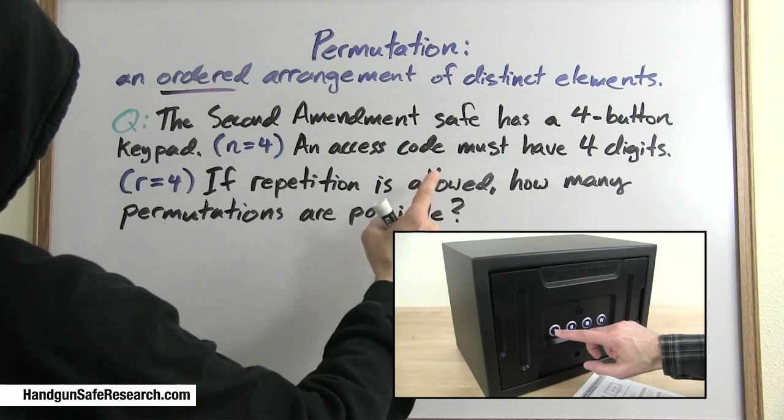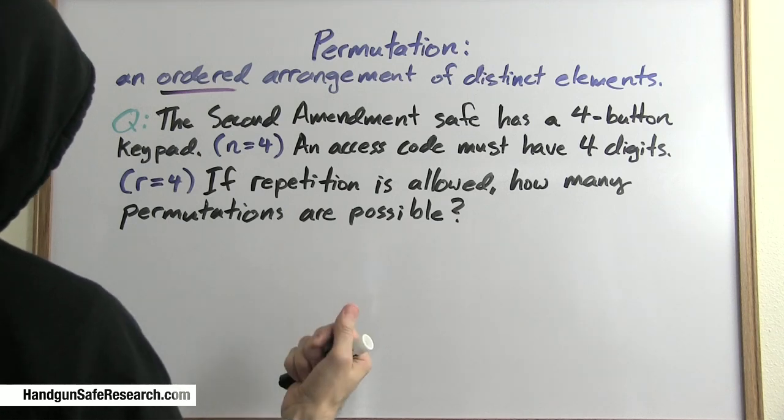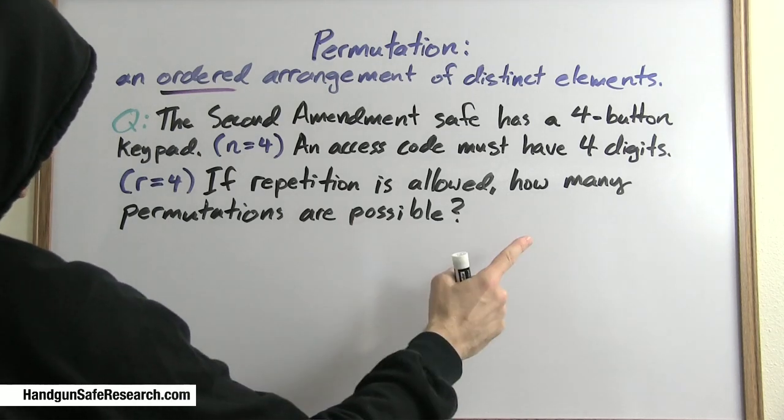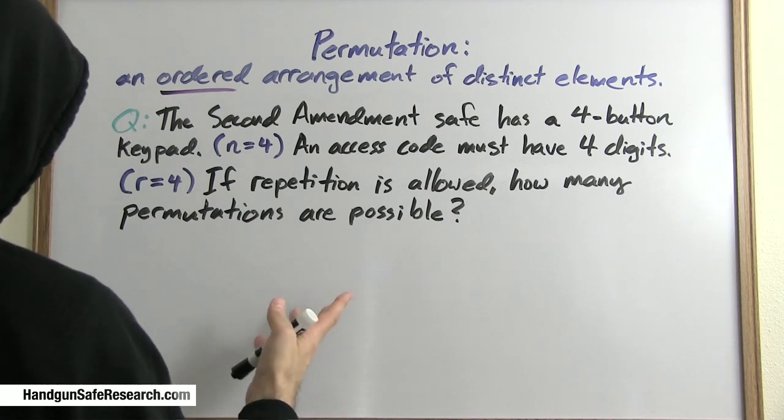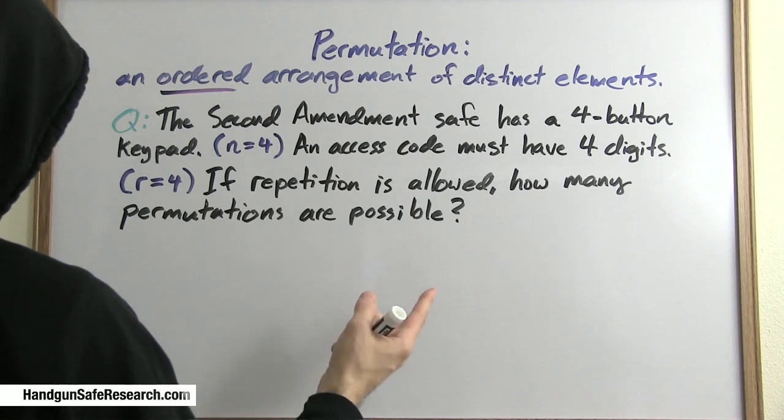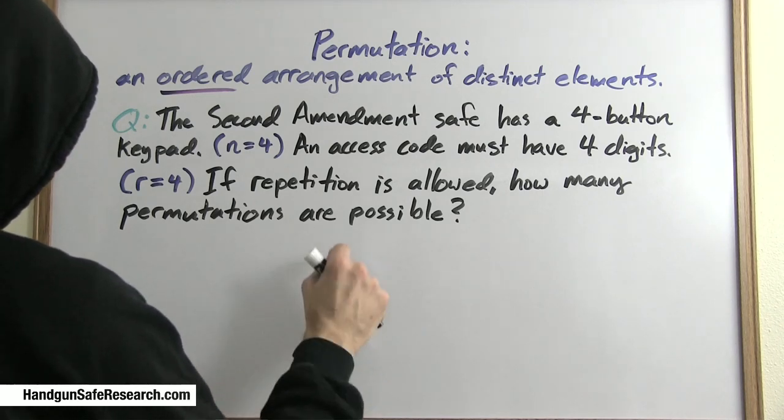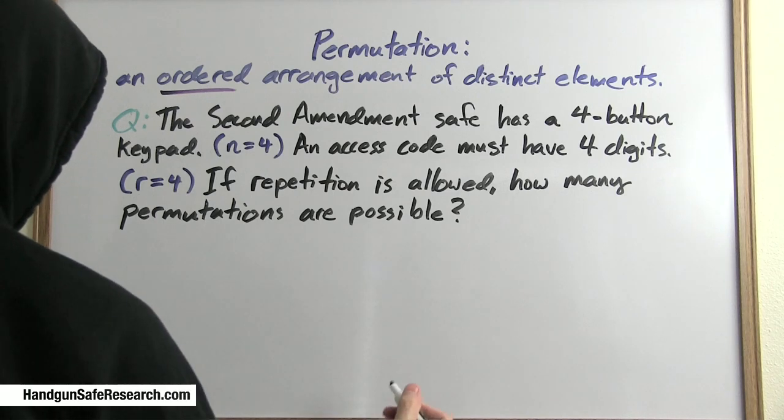The Second Amendment Safe has a four-button keypad, n equals 4. n is the set we will be selecting from. An access code must have four digits, so r equals 4. R is the number we will be selecting from set n. If repetition is allowed, in other words, if the same button can be pressed more than once, how many permutations are possible?